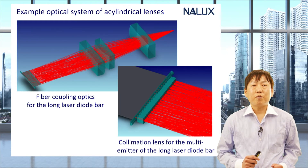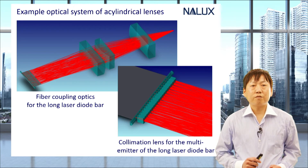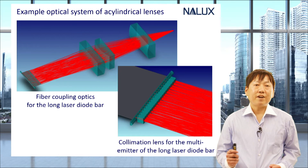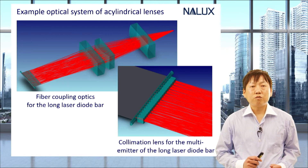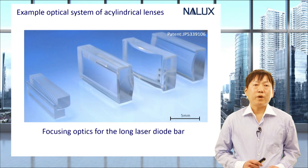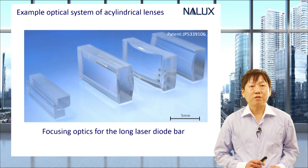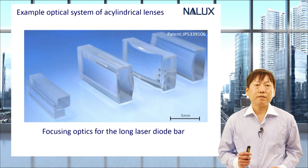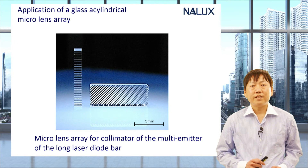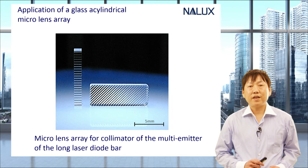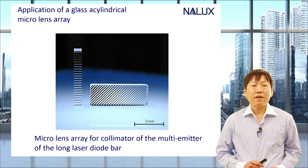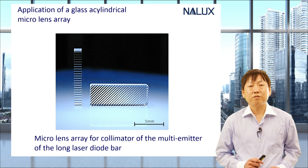Here is an example optical system using an acylindrical lens for a light source — the light source of a fiber laser. It is used as a focusing and collimating optical system for the long laser diode bar for fiber coupling. This is a micro lens array for collimating the multi-emitter of the long laser diode bar, with a lens pitch from 200 microns to 500 microns.